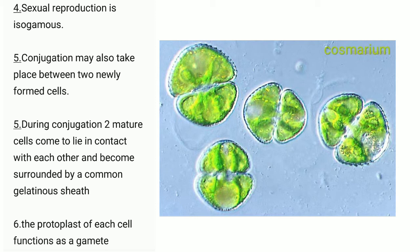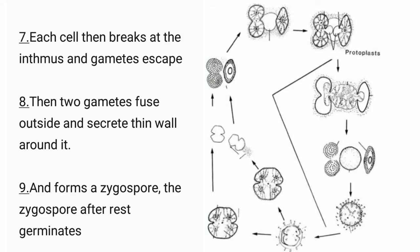The protoplast of each cell functions as a gamete. Each cell then breaks at the isthmus and gametes escape. Then two gametes fuse outside and secrete a thin wall around it, forming a zygospore after the rest germinates.